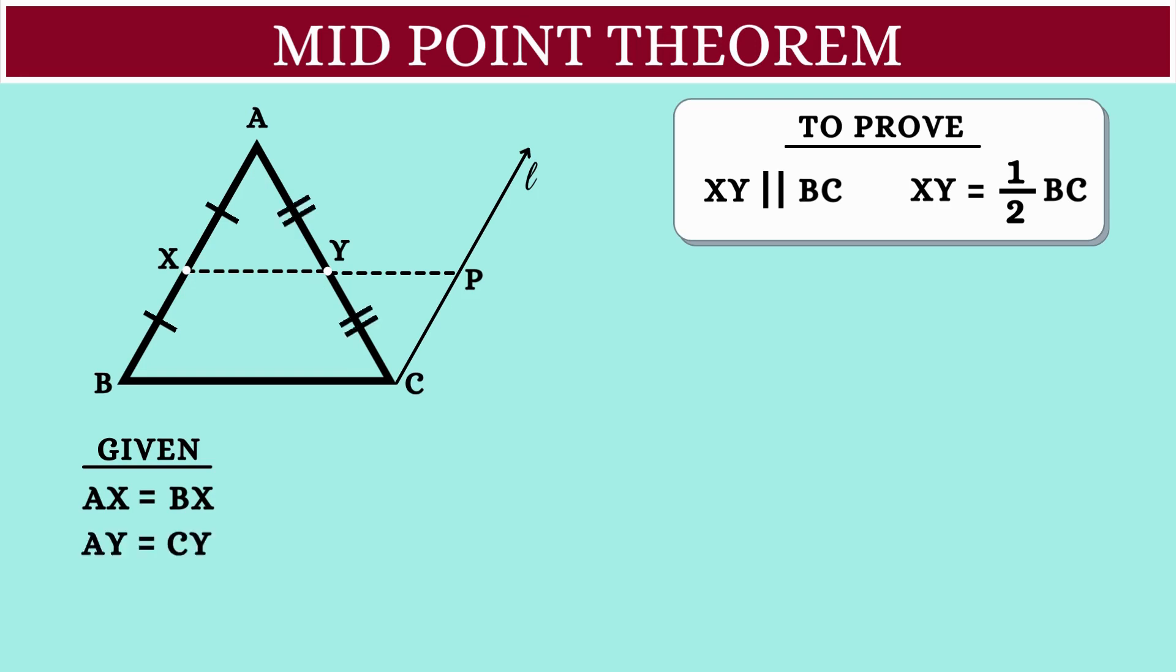We also know that lines AB and CP are parallel to each other. Now let's consider triangle XAY and triangle YCP.